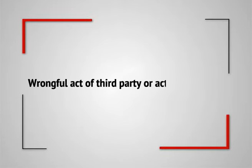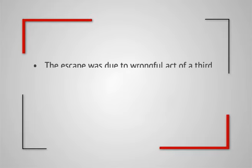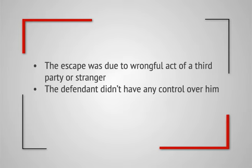Wrongful act of a third party or act of a stranger also forms an exception to the rule of strict liability. In order to avail this defense, it must be proved that the escape was due to the wrongful act of a third party or stranger, that the defendant did not have any control over him, and that there was no negligence on the defendant's part. Where the harm is caused due to the act of a stranger who is in no way under the control of the defendant, the defendant is not liable under this rule.